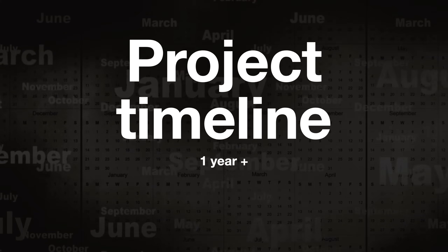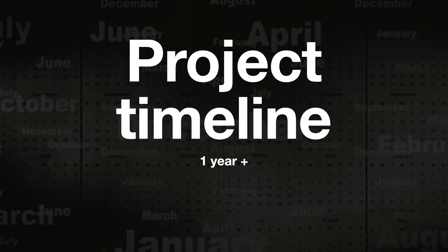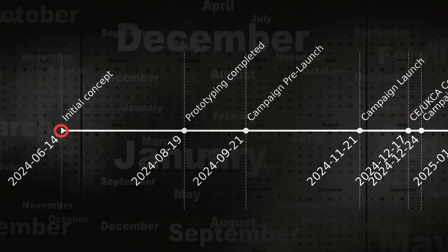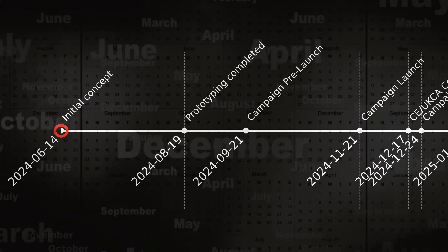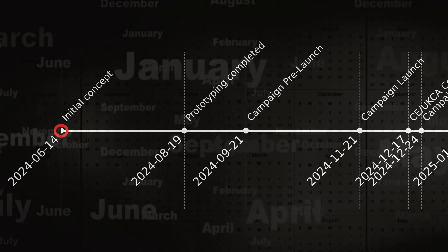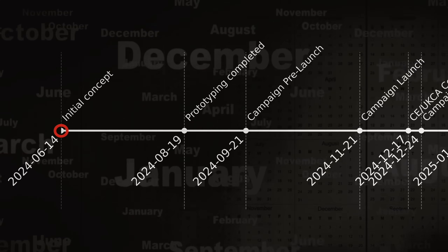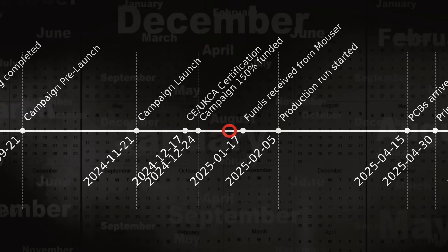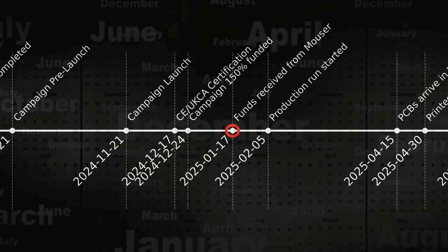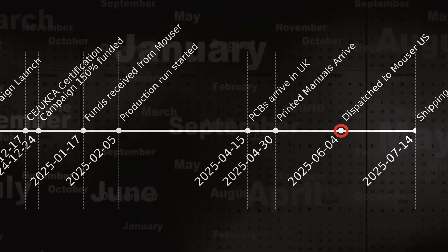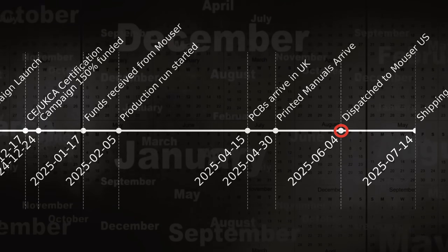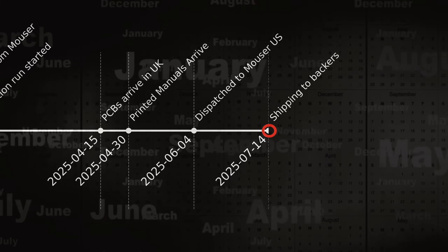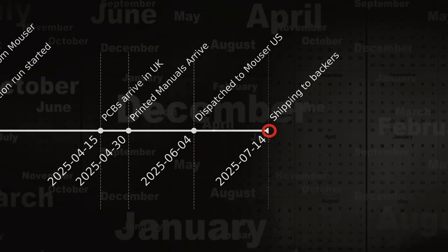How long did the project actually take? It took just over a year — 13 months in total from initial idea to shipping to backers. I had the initial idea back on June 14th 2024, when I got a full-colour silkscreen printed keyboard and it semi-worked. We launched the campaign November 21st 2024. We got the funds from Crowd Supply January 17th 2025. Completed all the manufacturing and packaging June 4th 2025. And we shipped all the orders to backers on July 14th 2025 — end-to-end, 13 months exactly.